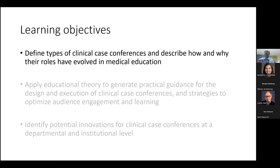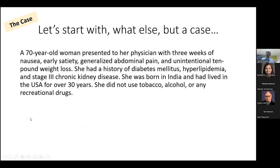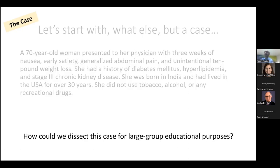To define what I even mean by case conferences, I'm going to get really meta — I'm going to actually present a case through the course of this presentation and use it to illustrate some of the principles I talk about. This is the case of a 70-year-old woman who presented to her physician with three weeks of nausea, early satiety, generalized abdominal pain, and unintentional 10-pound weight loss. She had diabetes, hyperlipidemia, and CKD. She was born in India and had lived in the United States for over 30 years. She did not use tobacco, alcohol, or any recreational drugs.